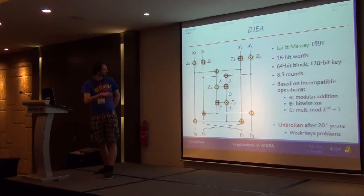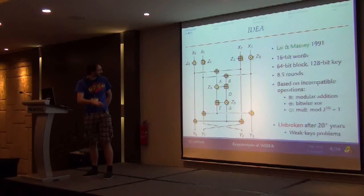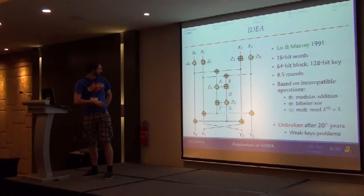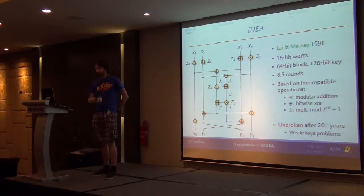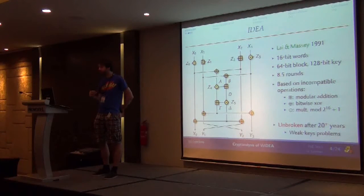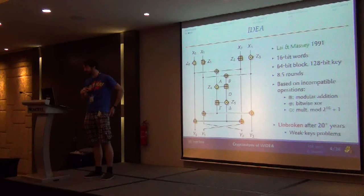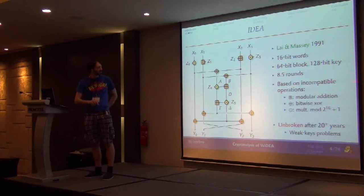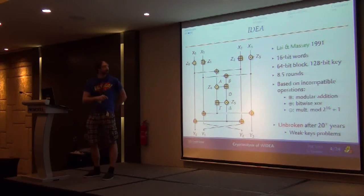You have a structure where you first XOR the values two by two to get some inputs, then you have a block of computation with additions and multiplications, and then the output is again XORed into the output. You have eight and a half rounds of this. An important feature is that you mix different operations defined over various algebraic structures — they are supposed to be more or less incompatible. You have additions, XOR, and multiplication modulo 2^16 + 1.